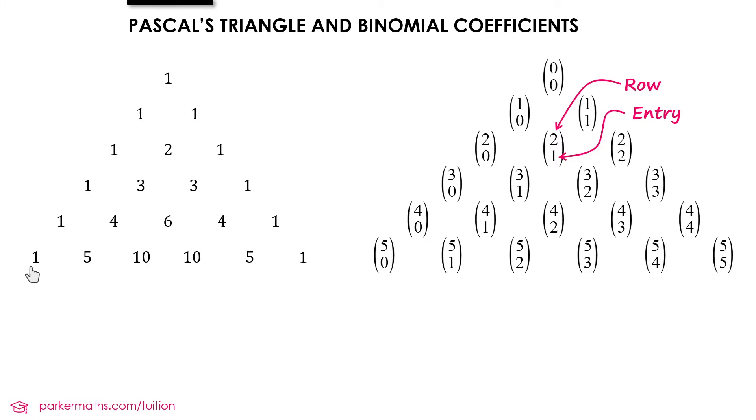And then we count across 0, 1, 2. And we find that the entry is 5 choose 2.